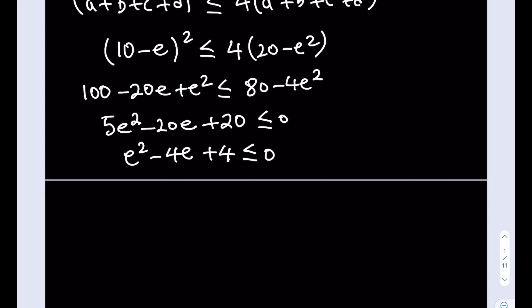When is this going to be less than or equal to 0? Only at one point, because this is equal to (e-2)² and as you know, a square can never be negative. So the only option that's left for us is basically 0. So e-2 has to be 0, which means e has to equal 2.